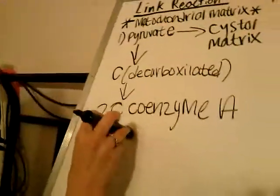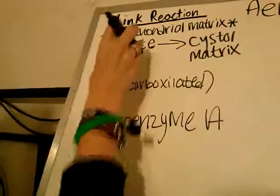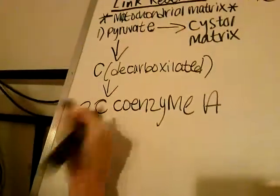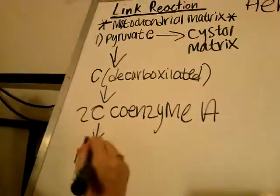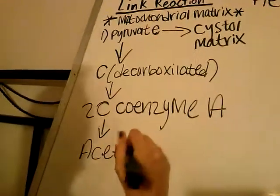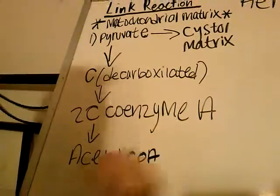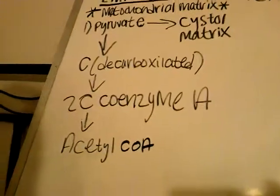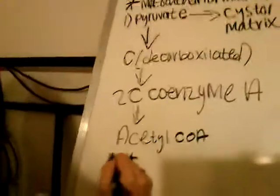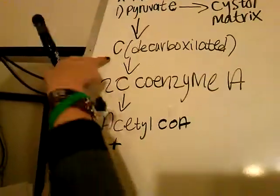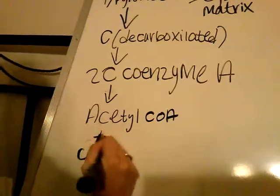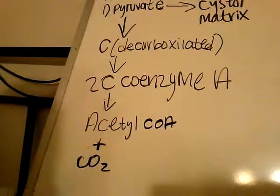Anyways, the two are combined — pyruvate and coenzyme A — to form Acetyl Co-A! You can't forget that the carbon that is decarboxylated combines with oxygen to form CO2, which is toxic. We exhale that.